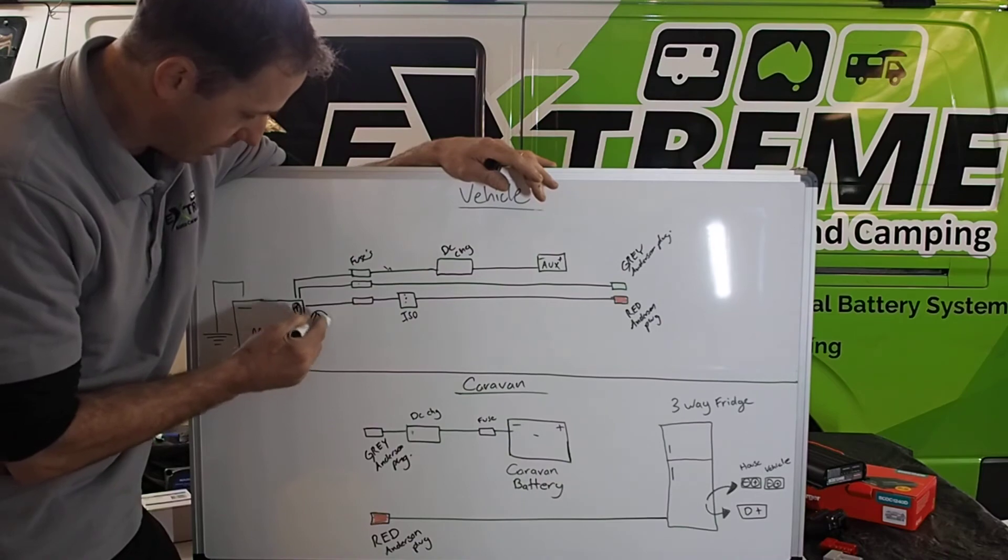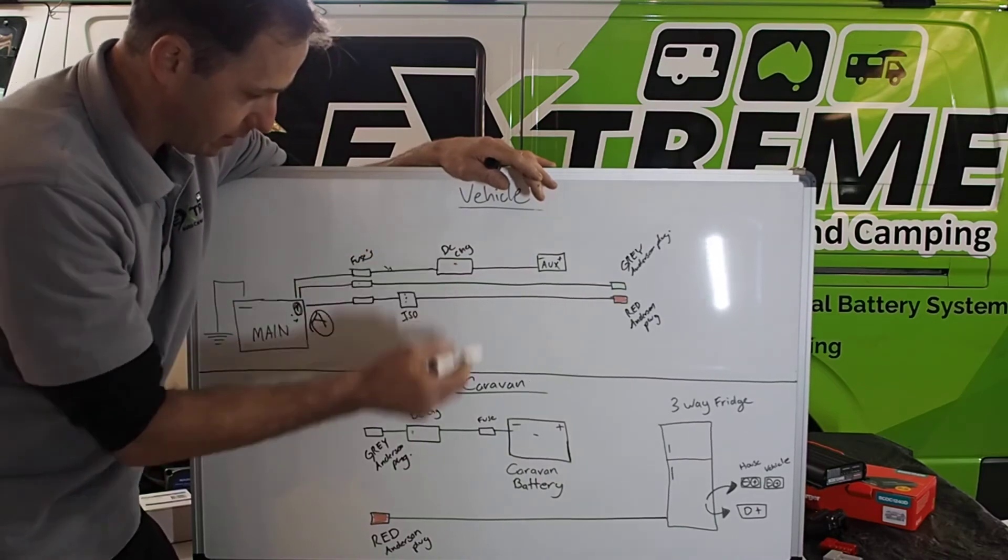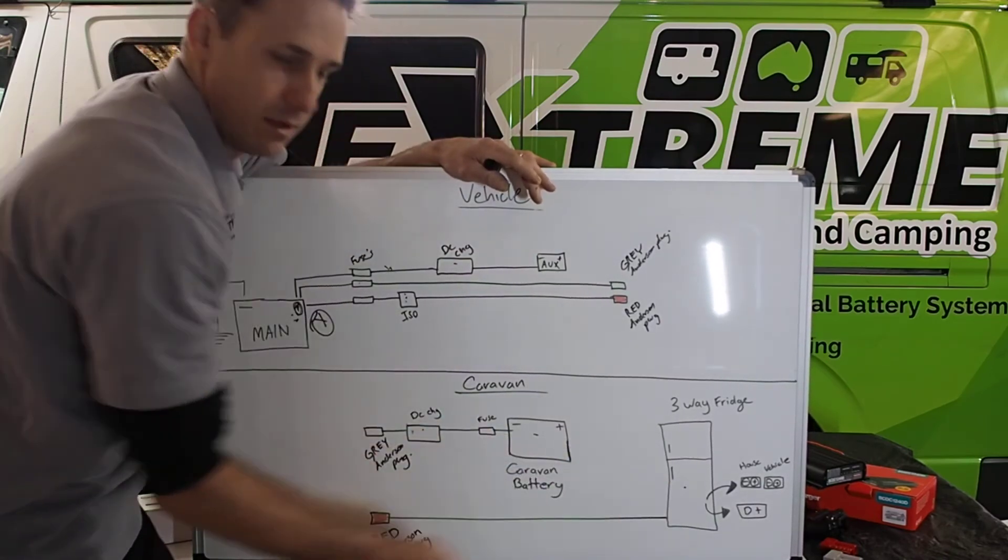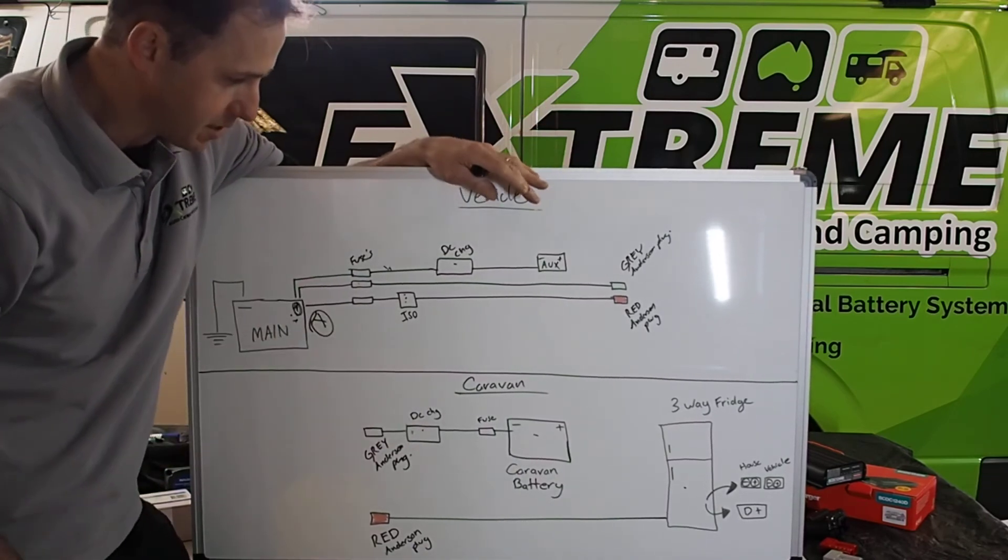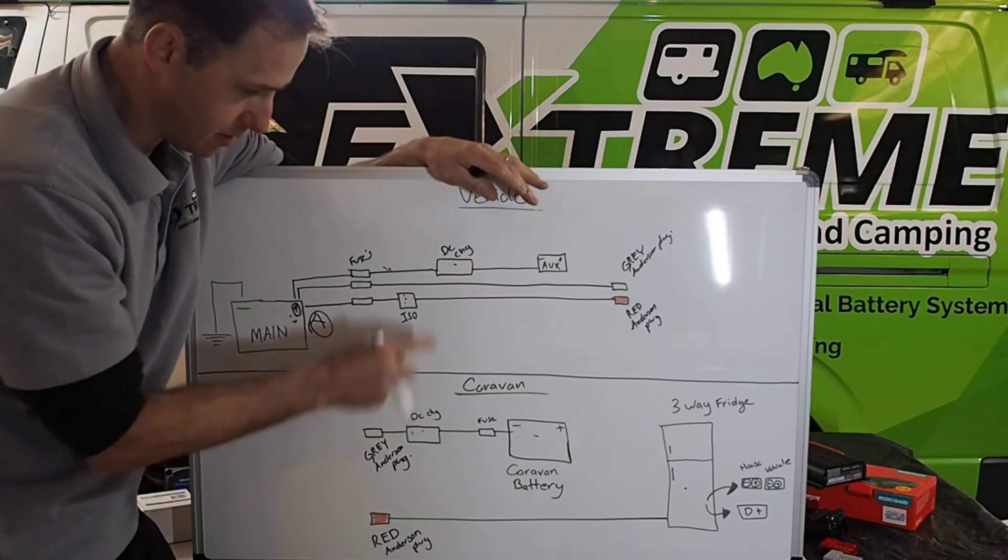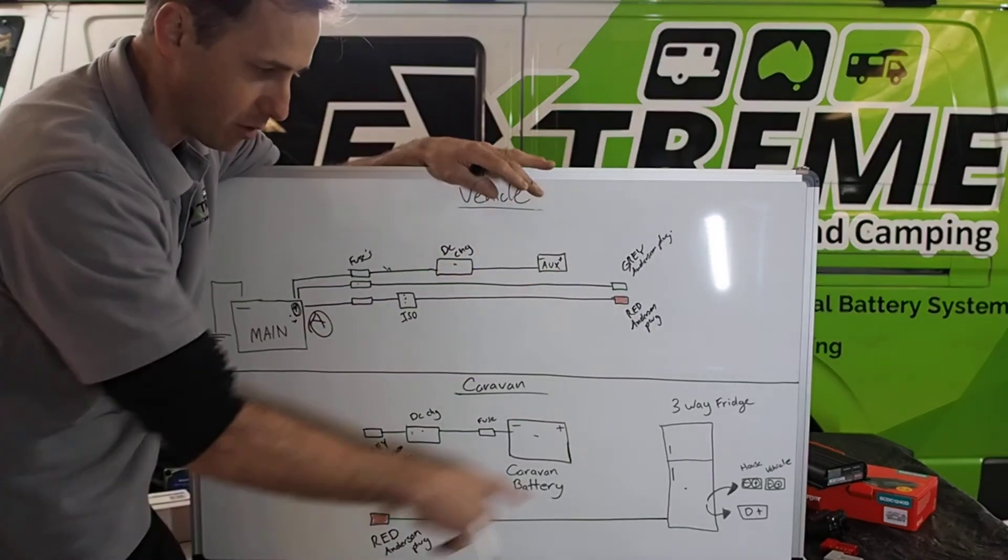So you want to get power from point A to point B as easy and as efficient as you can. So this is the ultimate setup incorporating two DC chargers and a three-way fridge, whether it be automatic or not.